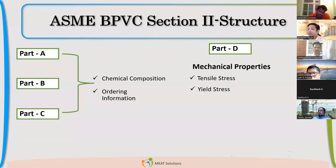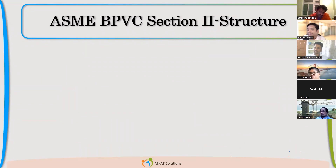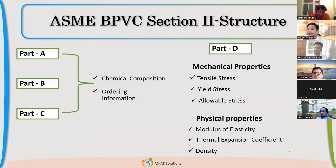Part D talks about mechanical and physical properties. For mechanical properties — like tensile strength, yield, and allowable stresses — those things you will find in Part D. For physical properties: modulus of elasticity, thermal expansion,